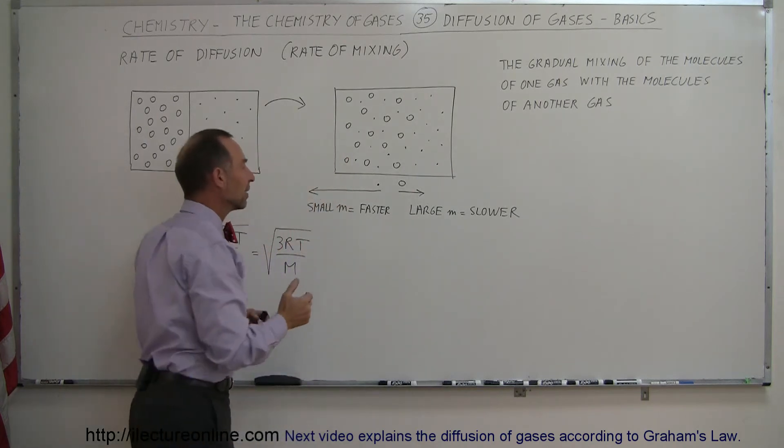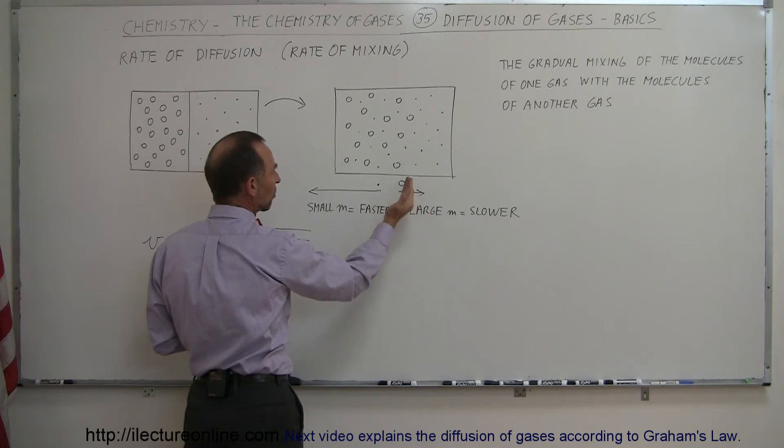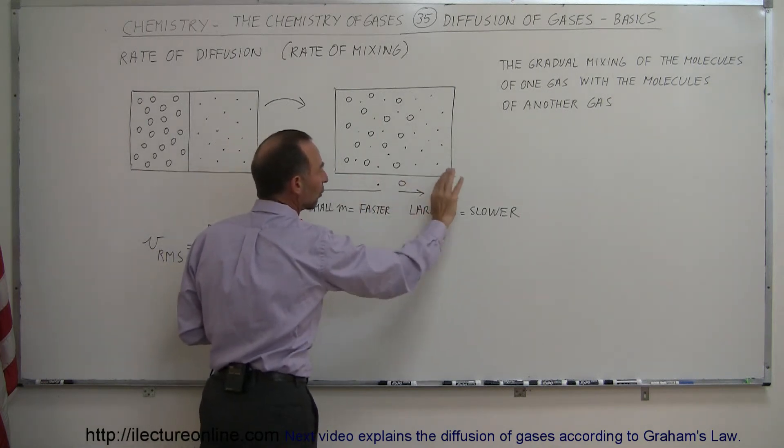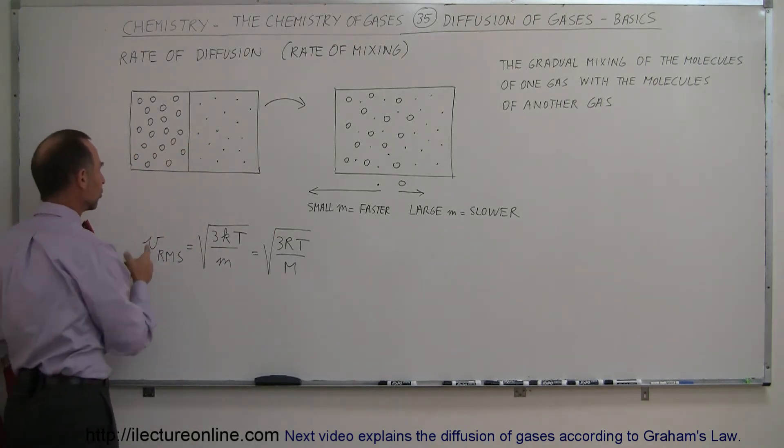And so we find out that these small molecules with smaller mass tend to migrate over much faster. The larger molecules with large mass tend to migrate over a lot slower. And that is typically due to the speeds of these molecules.